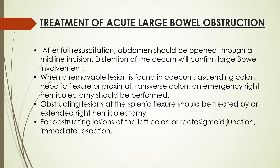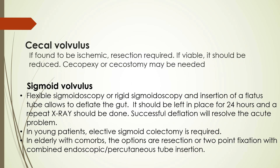When the large bowel is obstructed, after full resuscitation, the abdomen is opened through a midline incision, and distension of the cecum confirms that the large bowel is involved. When a removable lesion is found in the cecum, ascending colon, hepatic flexure, or proximal transverse colon, an emergency right hemicolectomy is done. For obstructing lesions of the left colon or rectosigmoid junction, immediate resection is done. In cases of cecal volvulus, if it is found to be ischemic, resection is required; if viable, it is reduced and a cecopexy is done, in which part of the cecum is sutured to the ascending colon under a flap of parietal peritoneum.